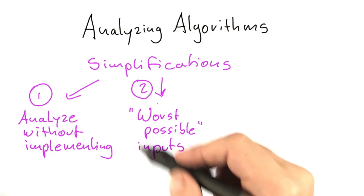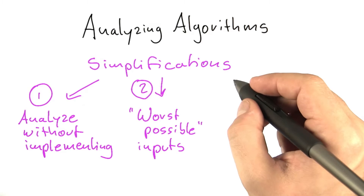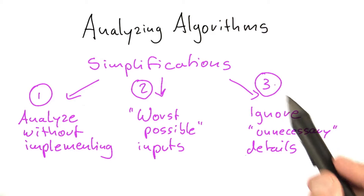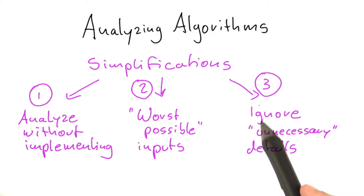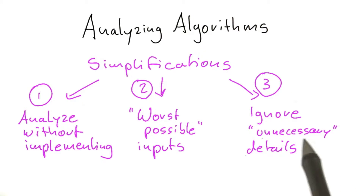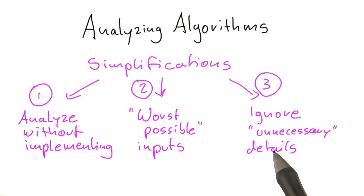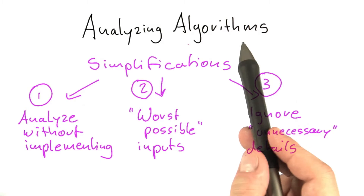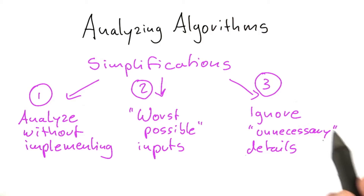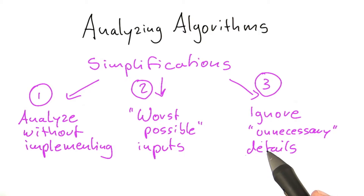And finally, I'll introduce a notation called big O notation that will allow us to ignore details that we'll call unnecessary, so that we can focus on the parts that are important for an algorithm and ignore those that we're not interested in.